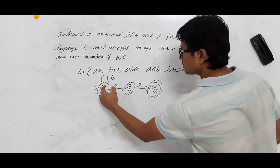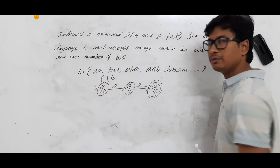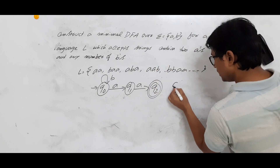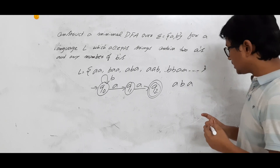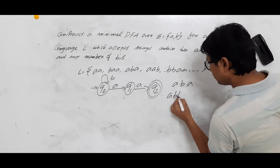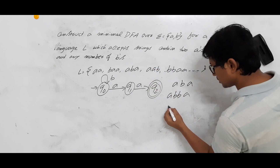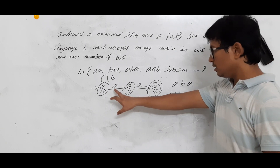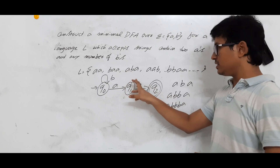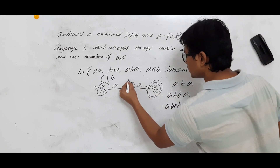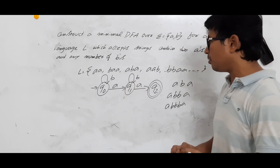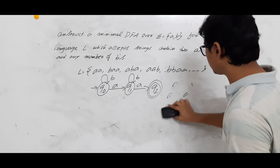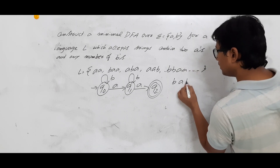Now Q0 is finished — on A and on B we have transitions defined. On Q1, on A we have a transition but we need to discuss B. For example, AABBA should be accepted — yes, it belongs to language L. ABBA should be accepted, and ABBBA should also be accepted. Once you see the first A, there can be any number of B's before the second A. So I will keep a self-loop on B at Q1.